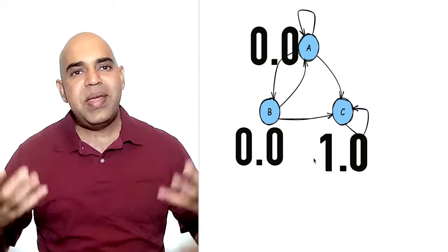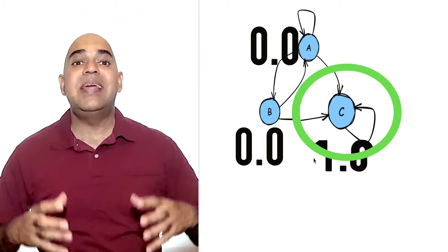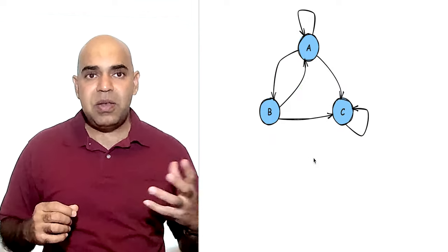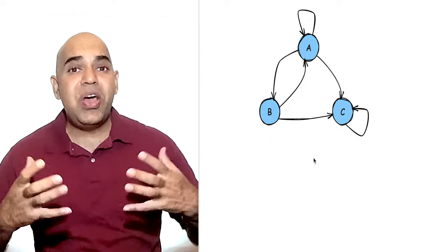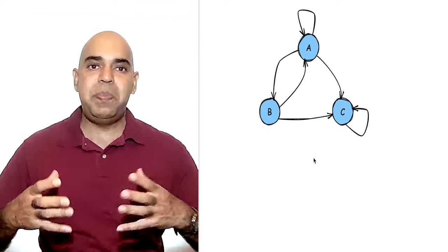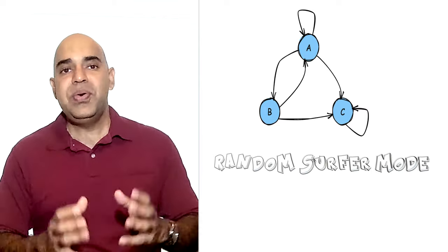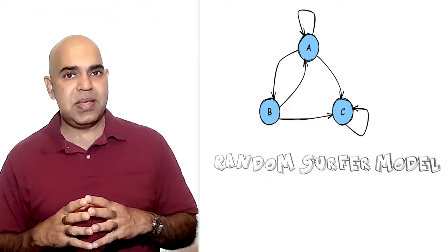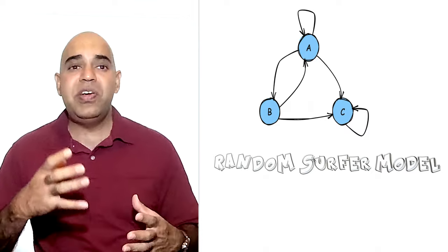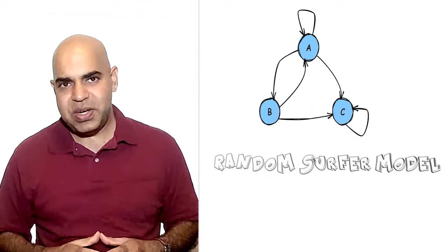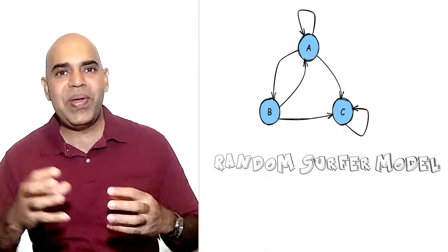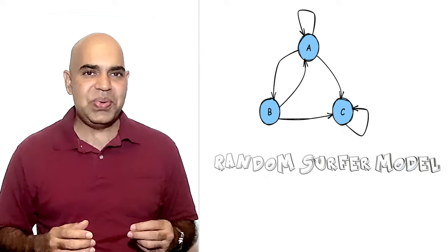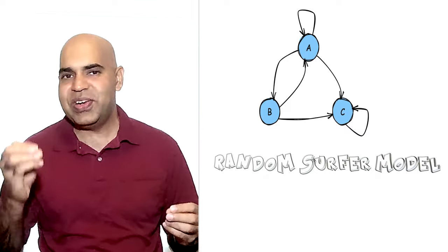That will create an illusion to the page rank algorithm that the spider trap website is the most important webpage. In my experience, the concept of spider trap is better explained by the random surfer model, which we already know from the page rank algorithm that we discussed. But I never used the term random surfer model because I do not like throwing jargon without explaining them. Now is a good time to explain what a random surfer model is.